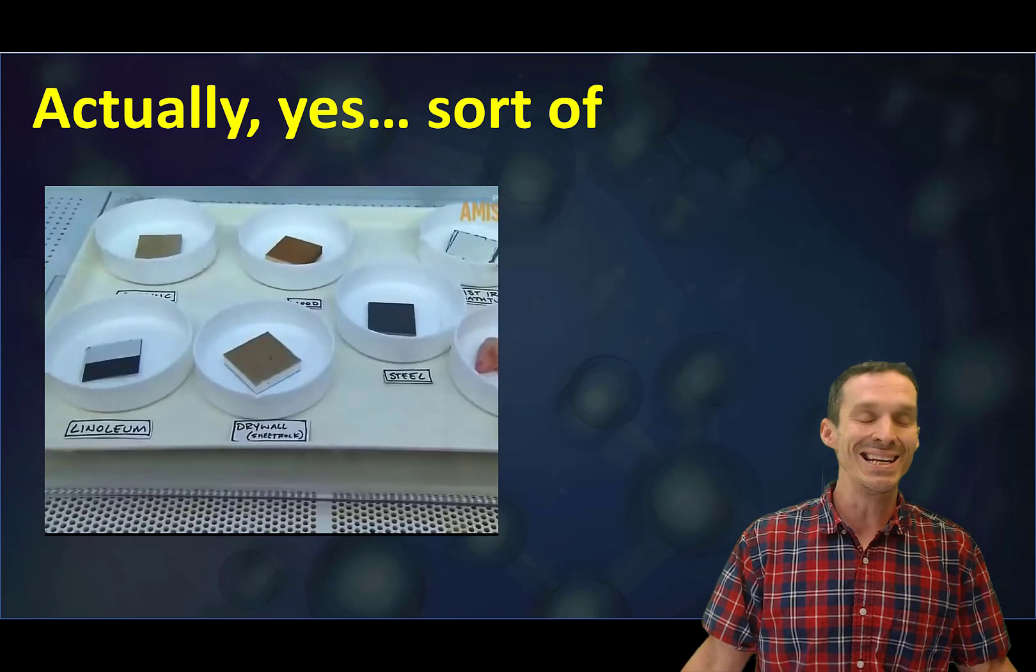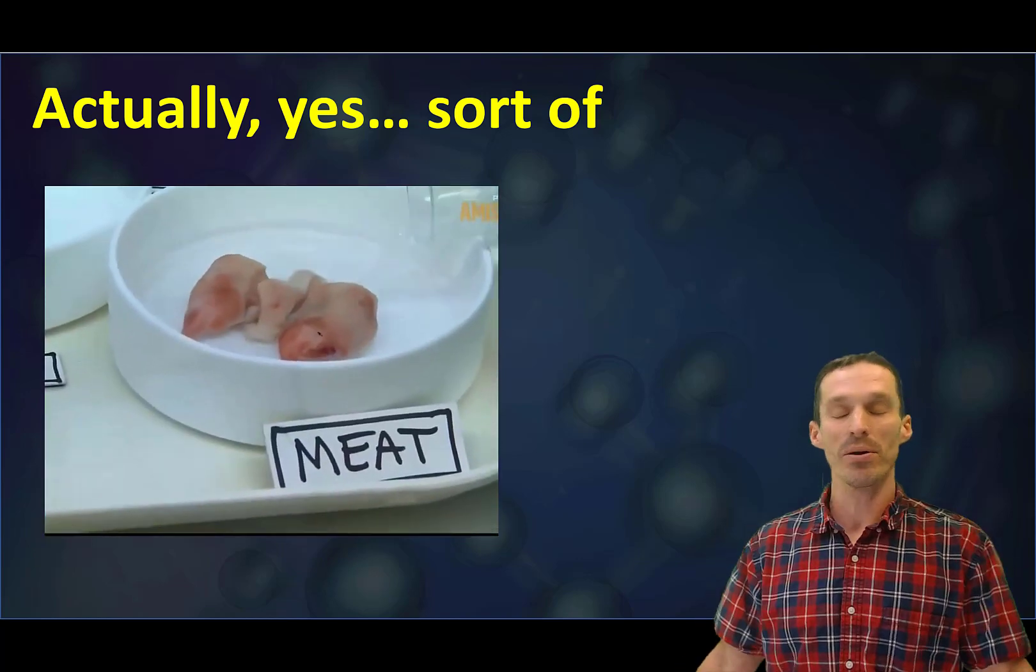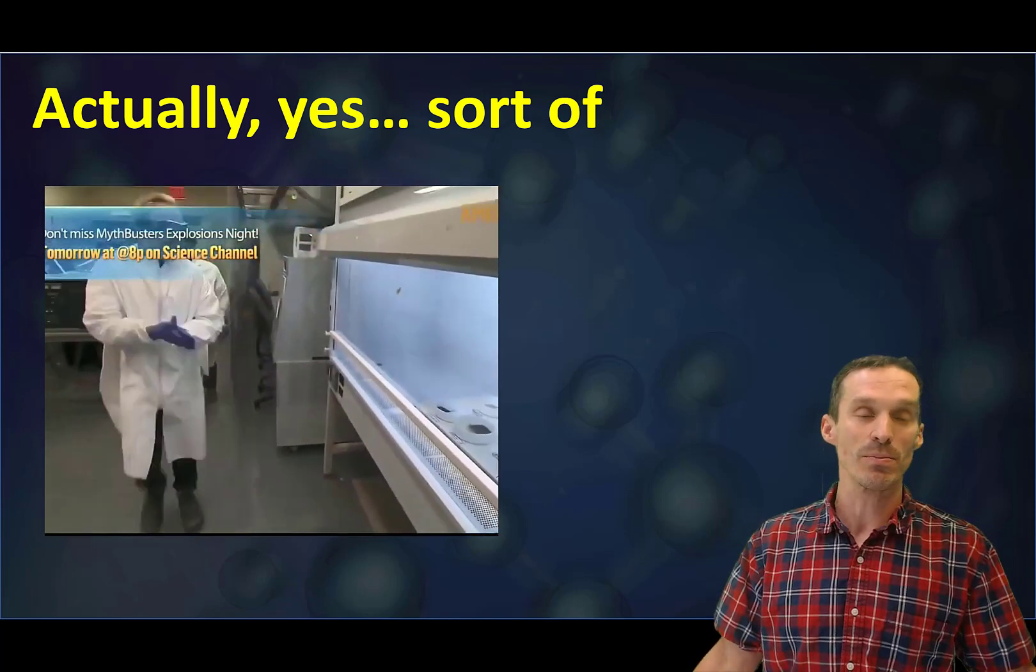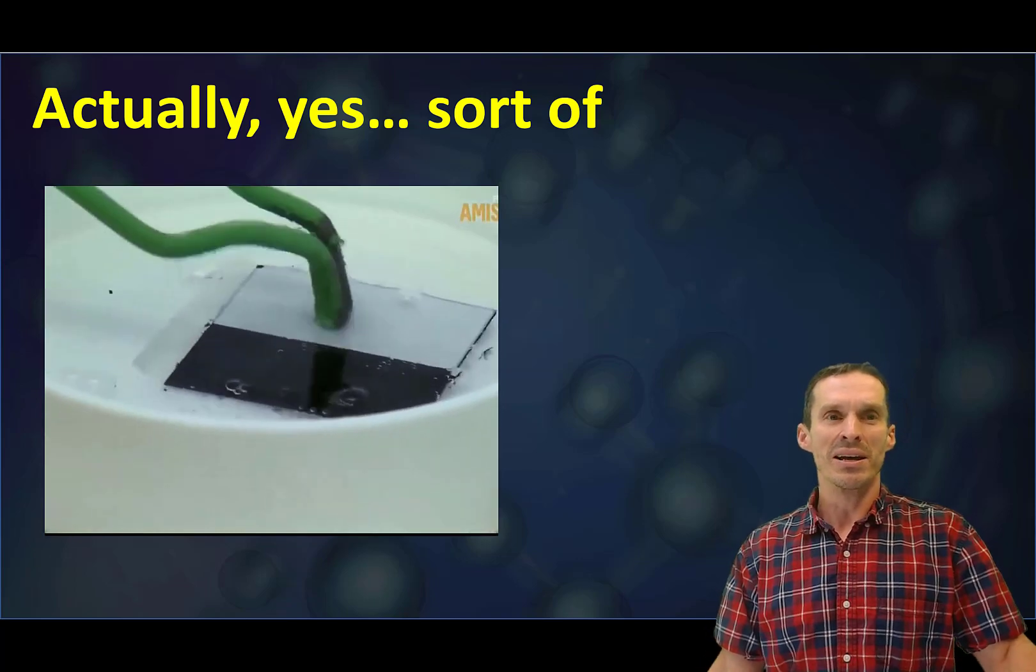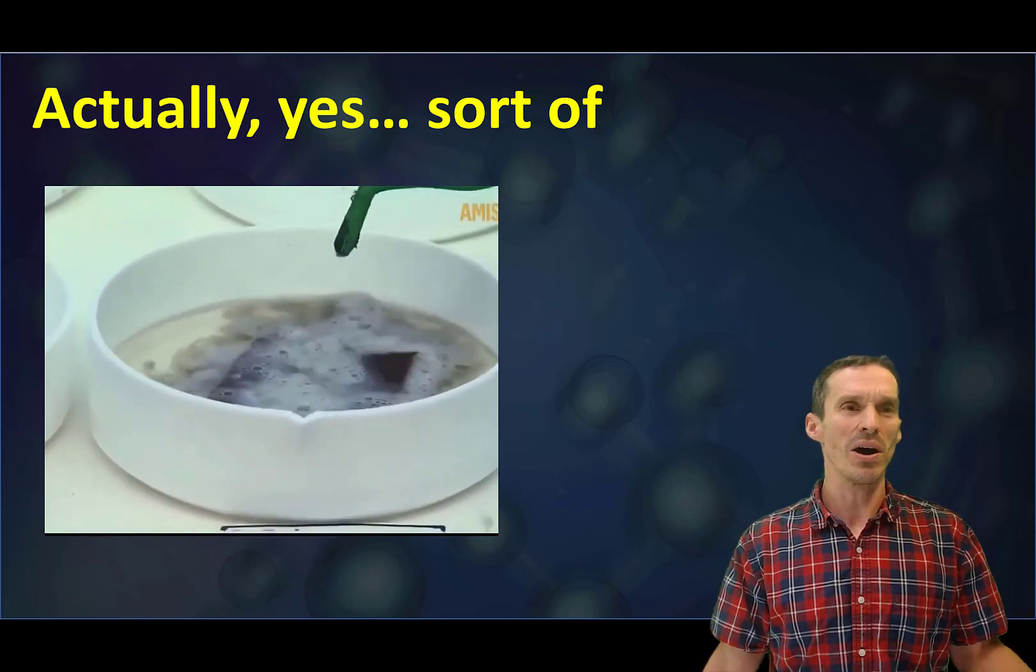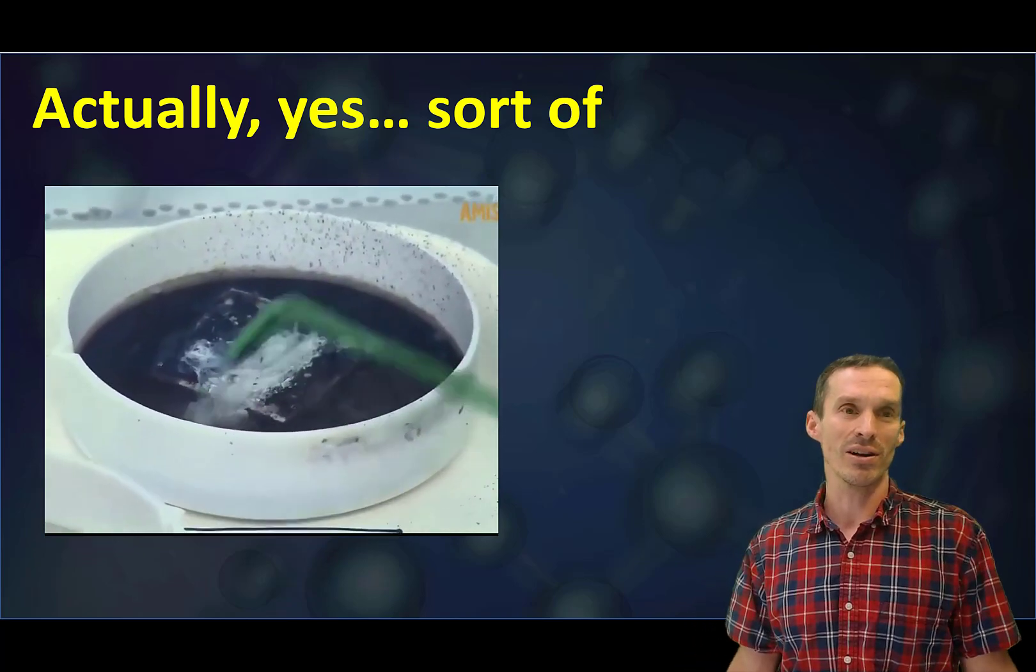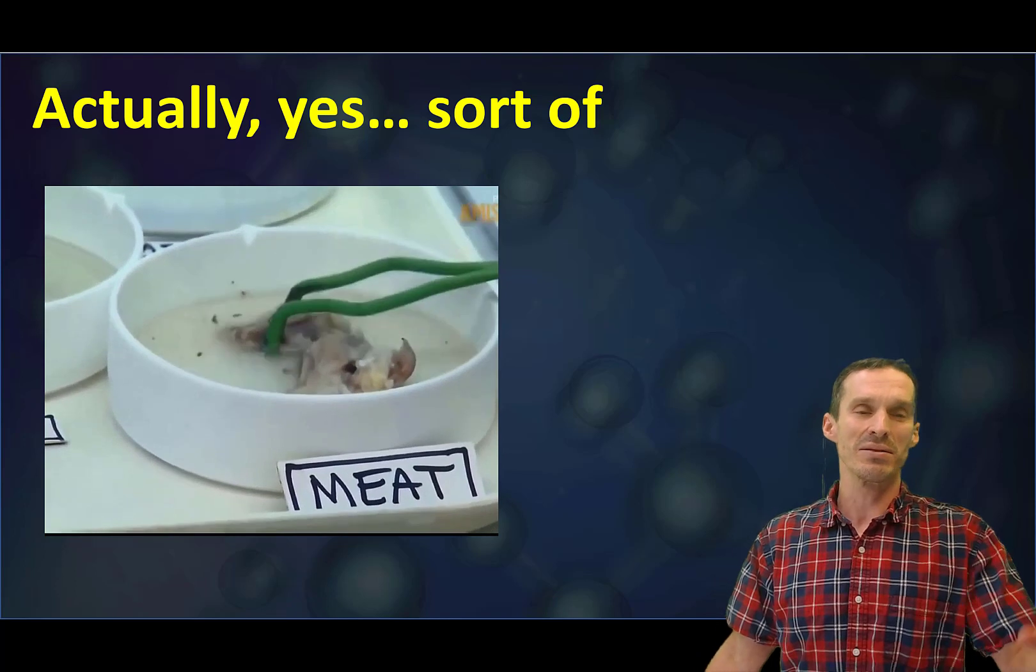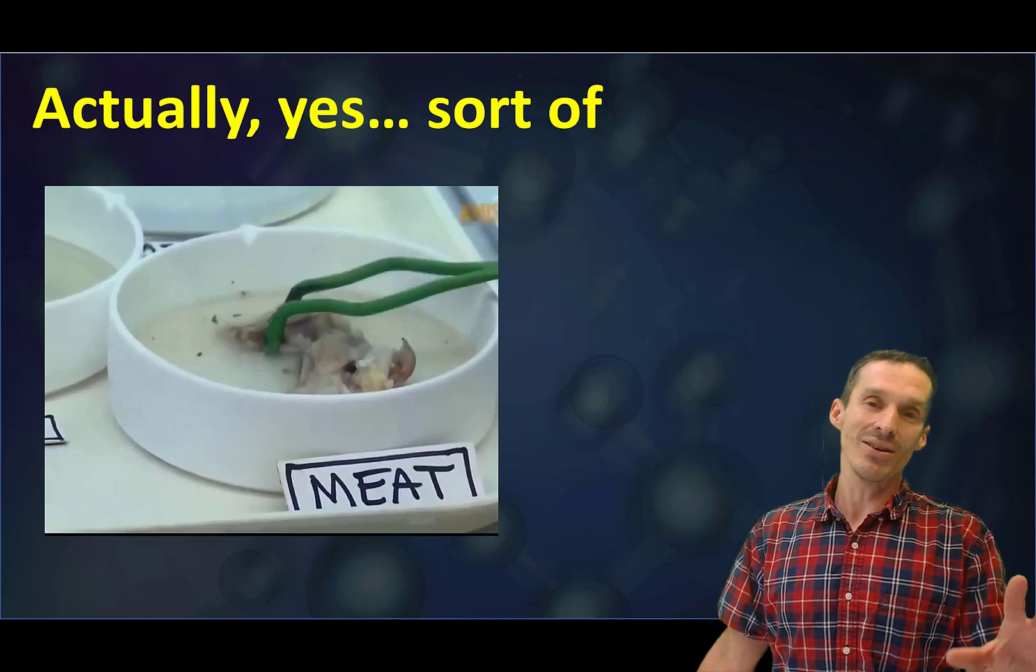Unfortunately, it isn't as, or maybe fortunately I guess, it isn't as strong as what people would think it is in the sense that if you put a metal or some organic matter into HF it doesn't just disappear on you instantly. There was a Mythbusters episode that looked into this. You're looking at different materials that were exposed to HF concentrated overnight. It did a good job on the gyprock, on the drywall, but the metal and wood barely got touched. The ceramic, yeah, a little bit was eaten off, but that's a piece of pork flesh in there and nothing happened to it.